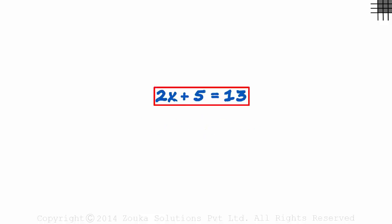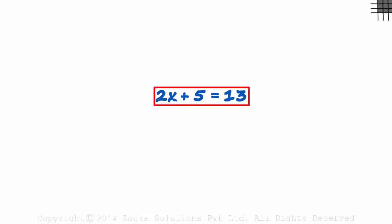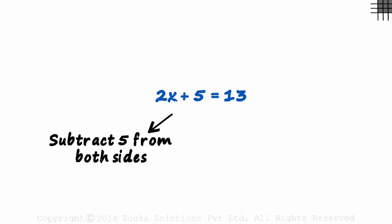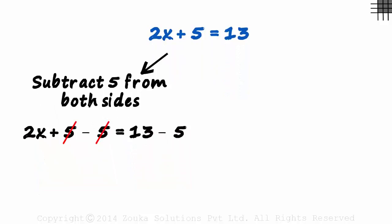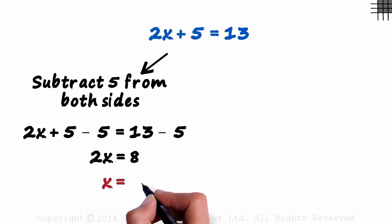How do we solve such equations? Generally, there are two ways in which you can get to the value of x. In this example, some would first subtract 5 from both sides. That would give us 2x plus 5 minus 5 equals 13 minus 5. The 5 cancels out on the left and we are left with 2x equals 8. Dividing both sides by 2, we get the value of x as 4.